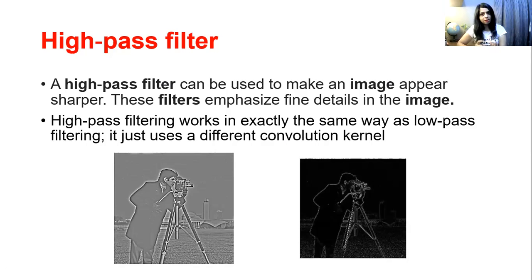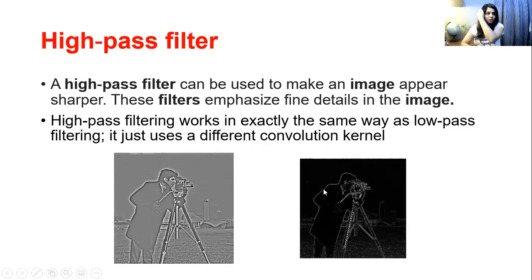When we apply a high pass filter, we get an output image in which you can see the edges clearly. Edges means you can see these body parts, the background and the foreground — they are more sharp and clearly distinguishable.